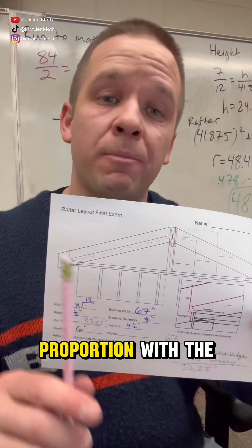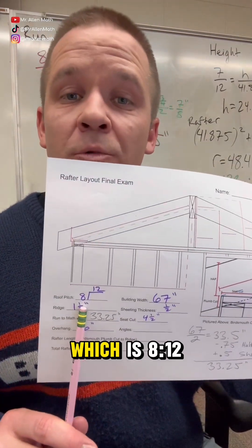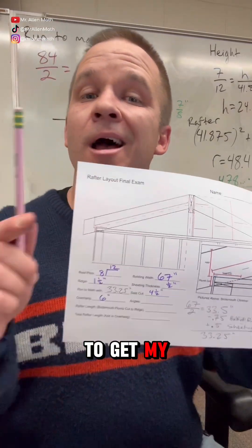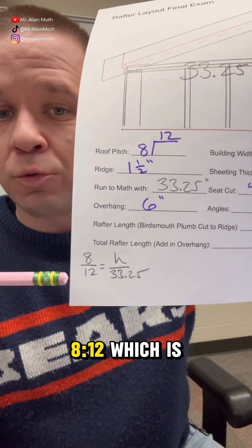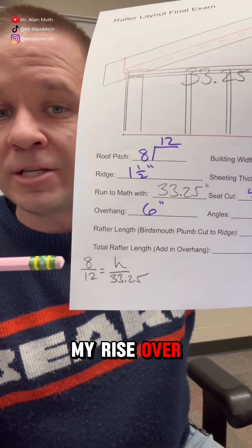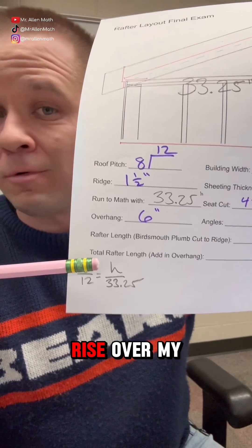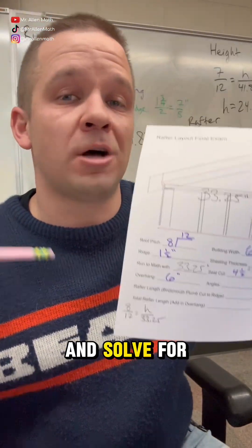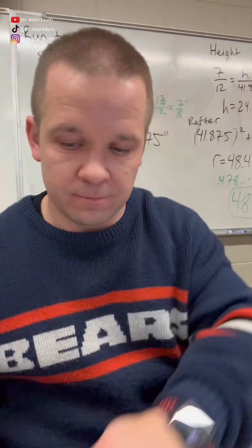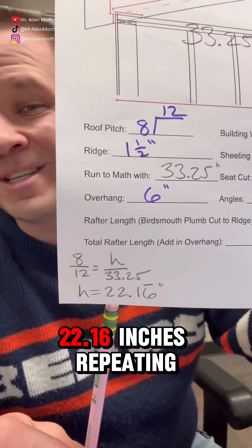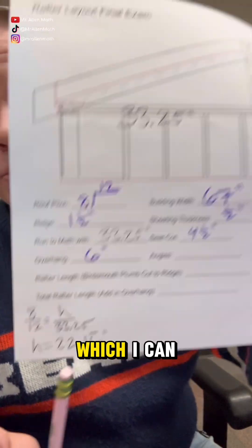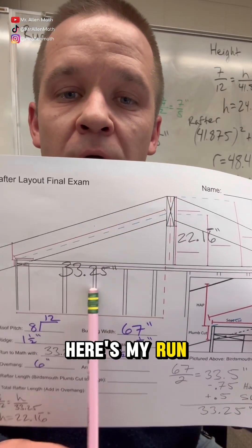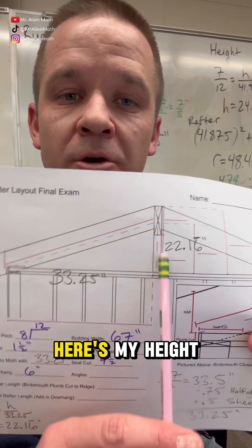Now I can set up a proportion with the pitch of my roof, which is 8/12, to get my height. I have a pitch of 8/12, which is rise over run, equal to my height over my run of 33.25. Cross-multiplying and solving for height, I get 22.16 inches repeating, which I can draw into this triangle. Here's my run to math with, here's my height — I have a right triangle.